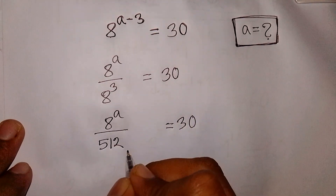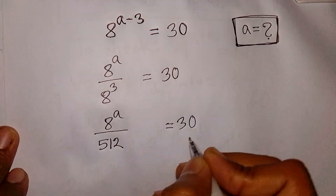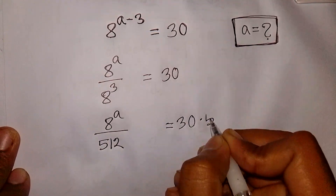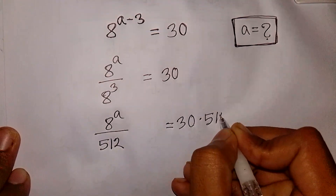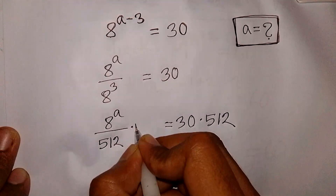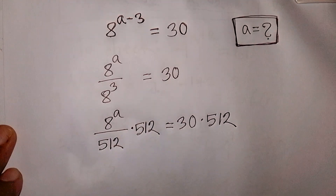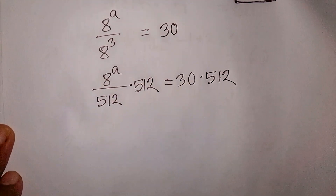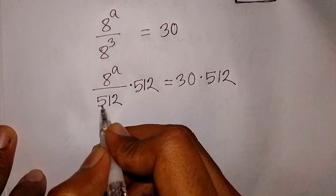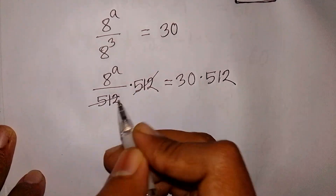Now we multiply by 512 on both sides. So multiply by 512 on each side. We see this 512 and this 512 will be cancelled, leaving 8^a isolated.